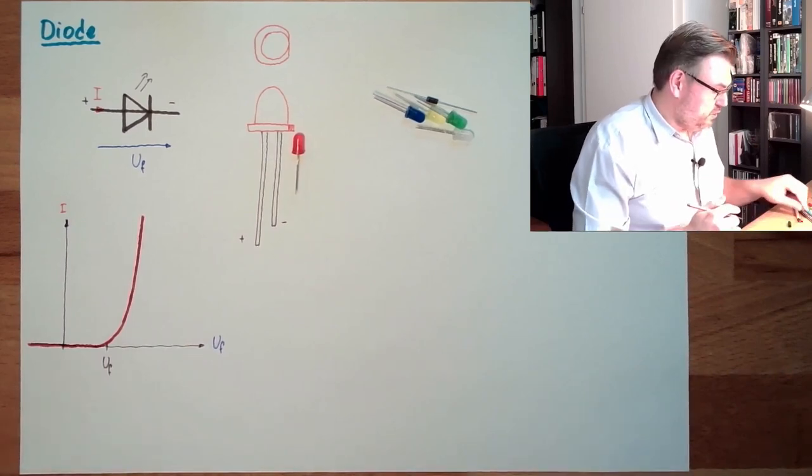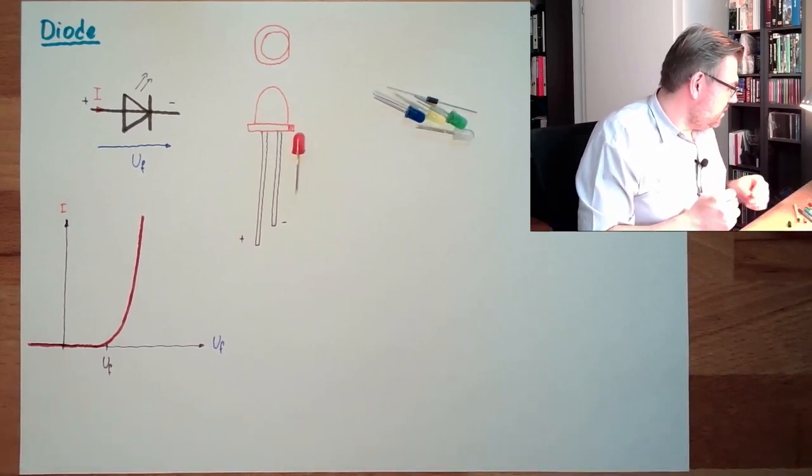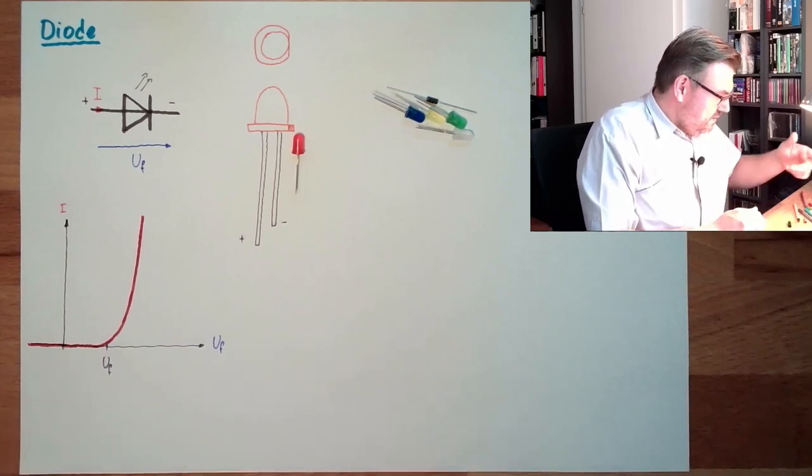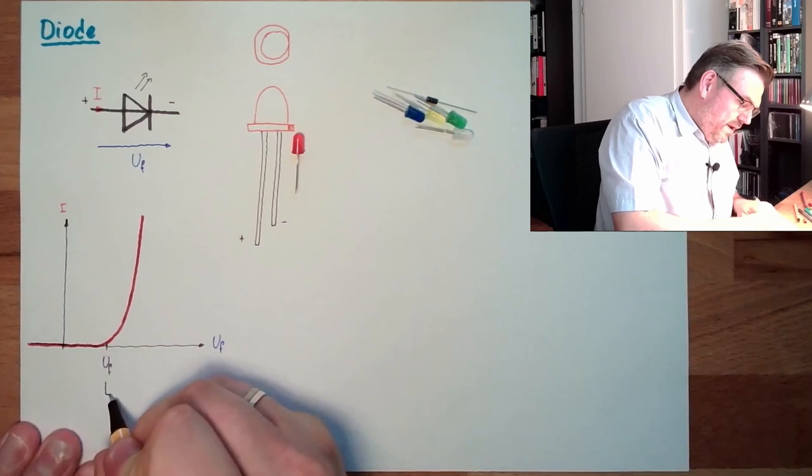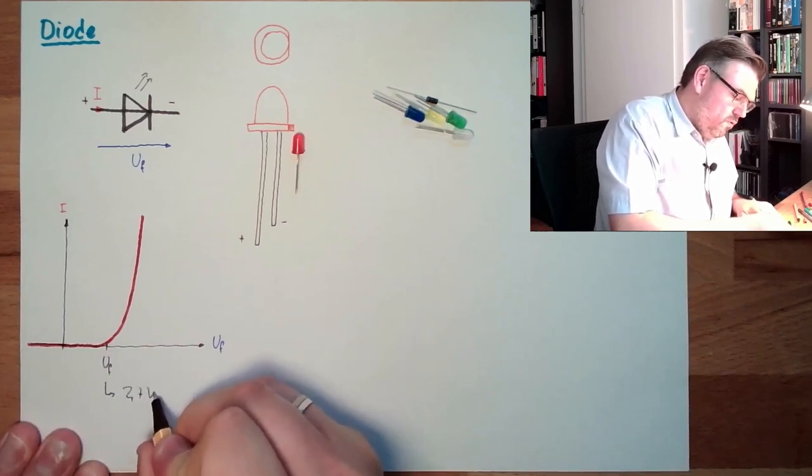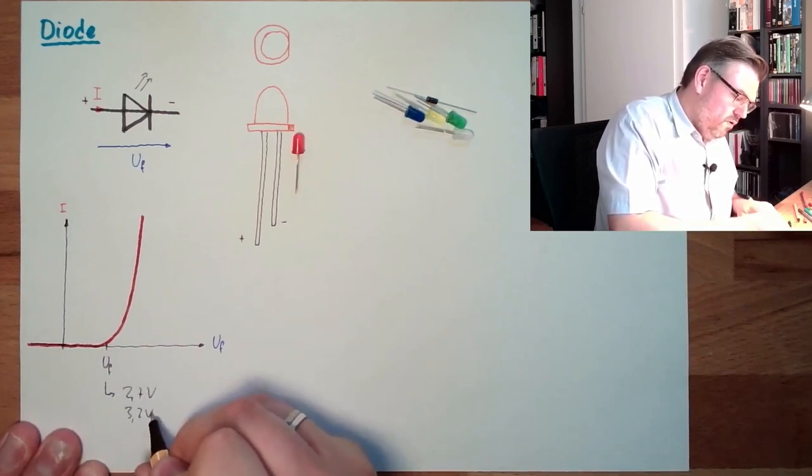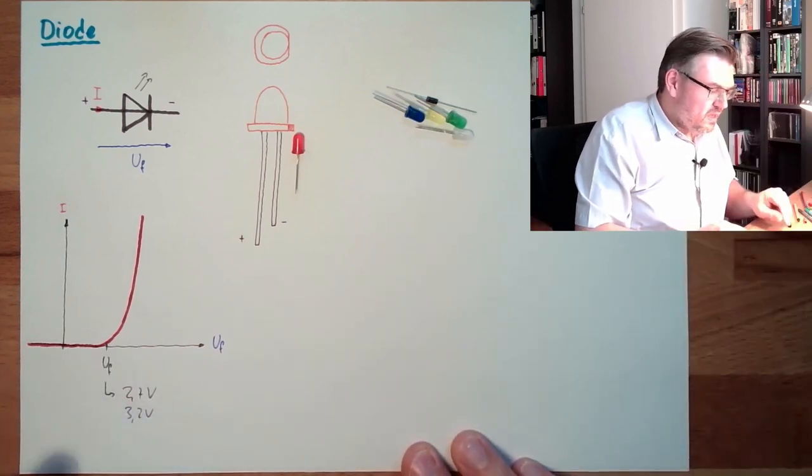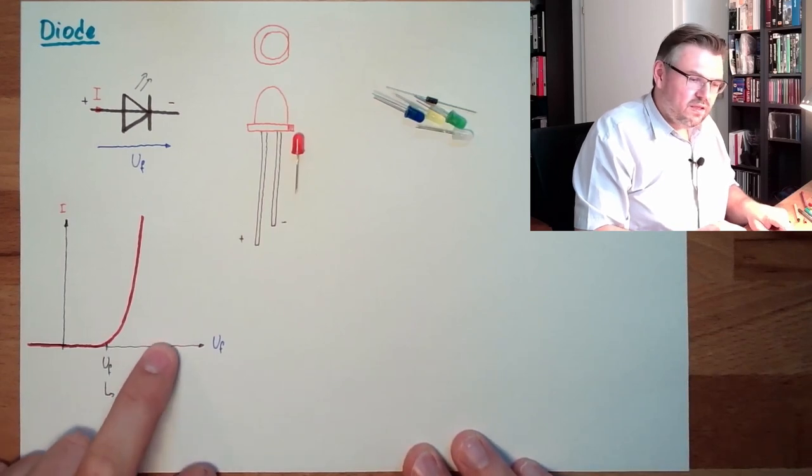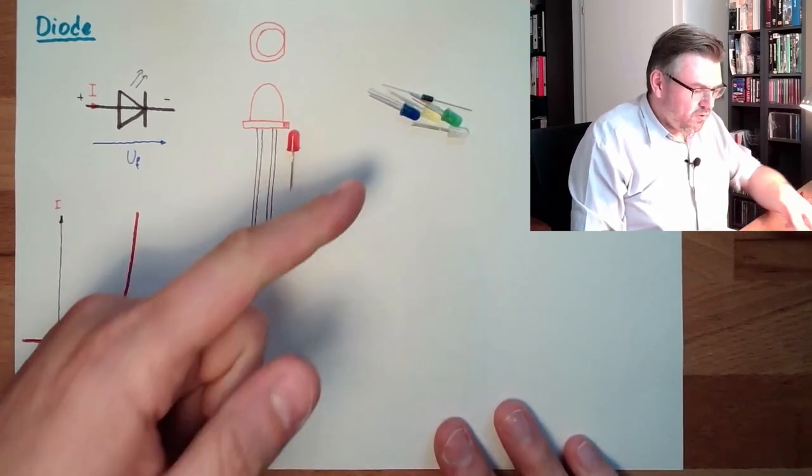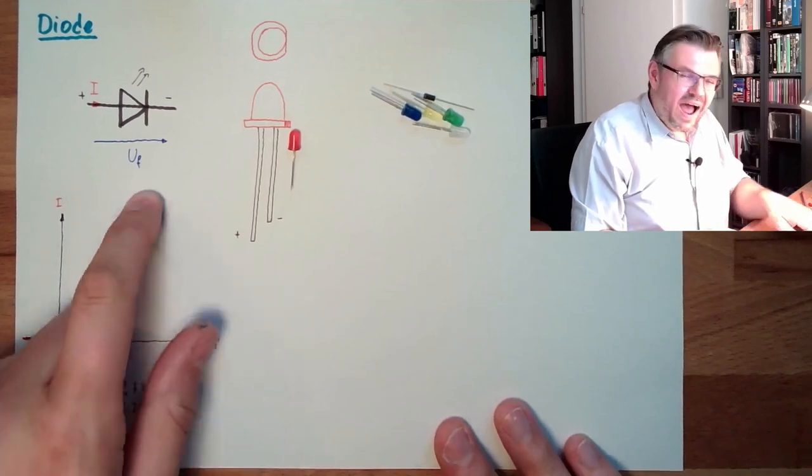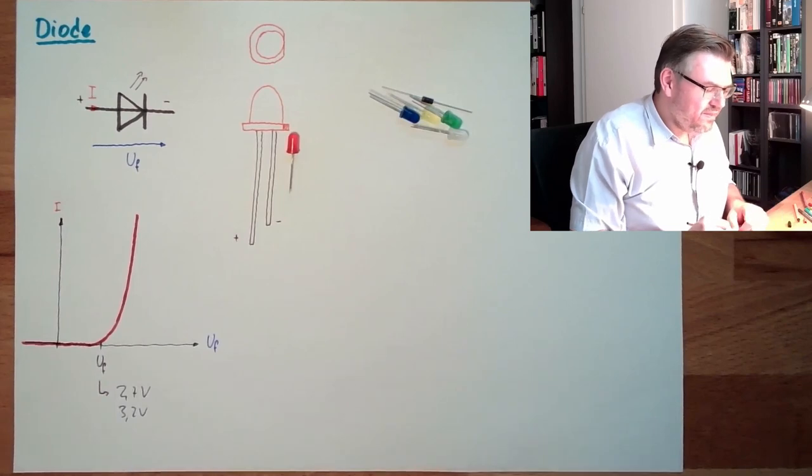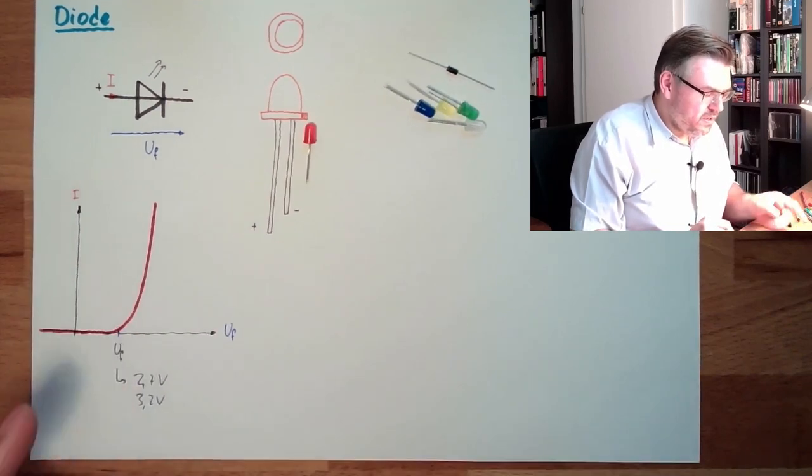And this is an issue. Why is this an issue? Because simply if we put this UF, depending on the material, this has 2.7 volts, this has 3.2 volts, depending on which color, which material is used inside, in this range somewhere. So if we are connecting 5 volts from our Arduino directly to an LED, it will reach high high high currents.